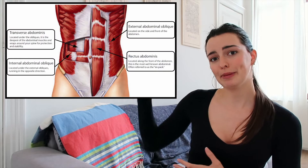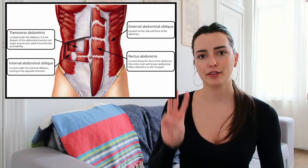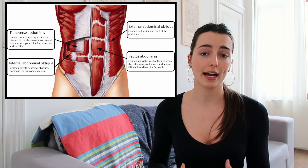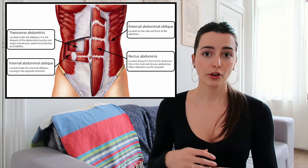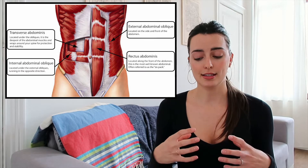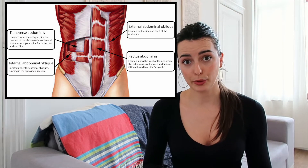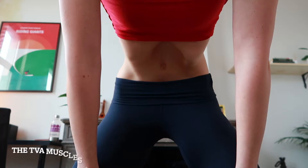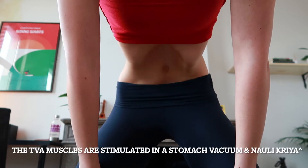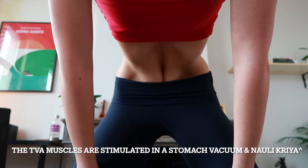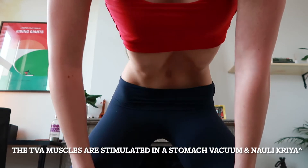Let's start with the anatomy of the abdominals — I'll insert a picture here. We actually have three distinct layers that comprise the muscles of our core. First, the most internal layer is the TVA, the transverse abdominals. Those muscles wrap around our spine and are responsible for stability and posture, keeping us upright and strong.